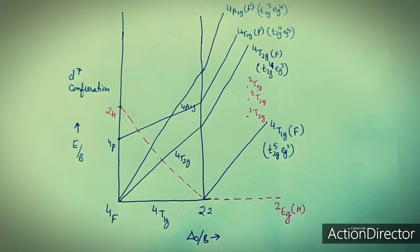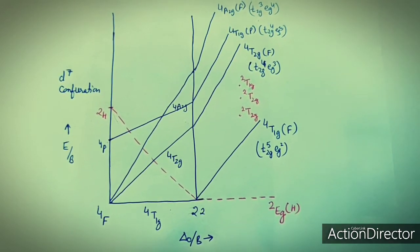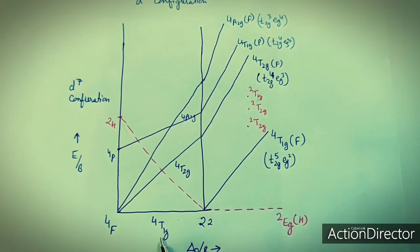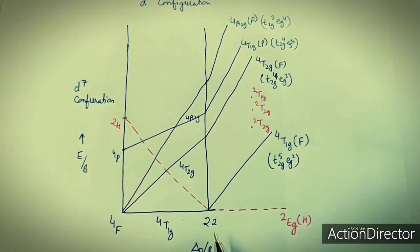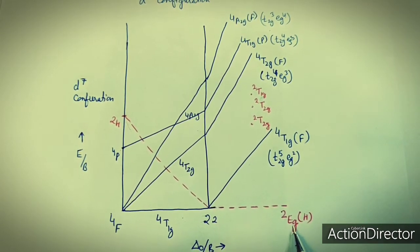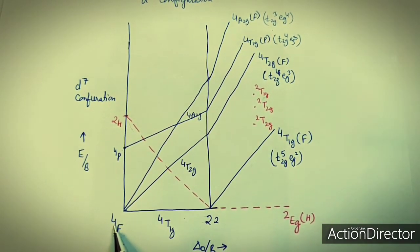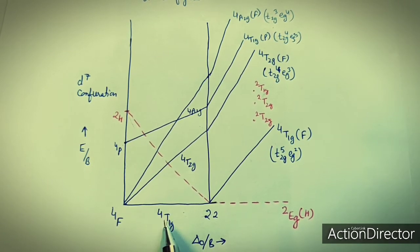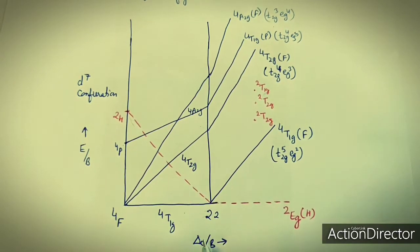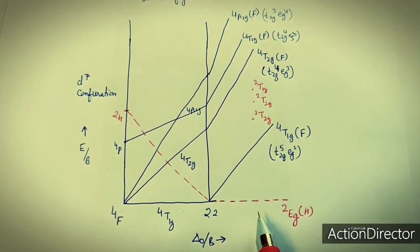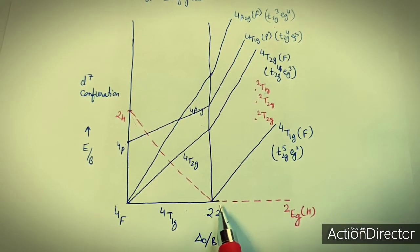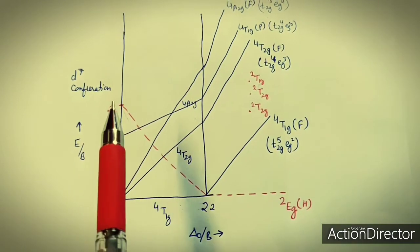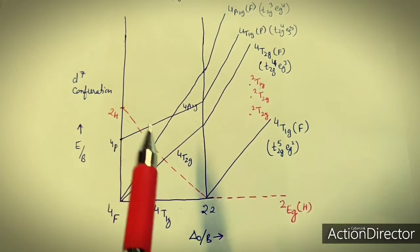This is the Tanabe-Sugano diagram for D7 configuration. The atomic term 4F generates the octahedral ground state term 4T1G, shown as a horizontal line at the left side of ΔO/B = 22. After 22, the ground state term for a strong field complex is 2EG. This 2EG is generated from the 2H term, which is why it is shown with a red dot — it is generating from 2H.